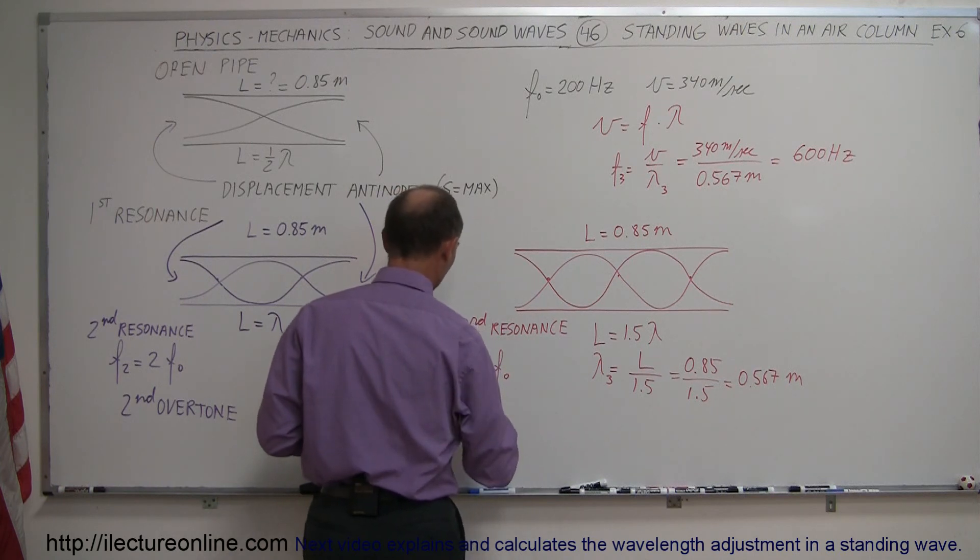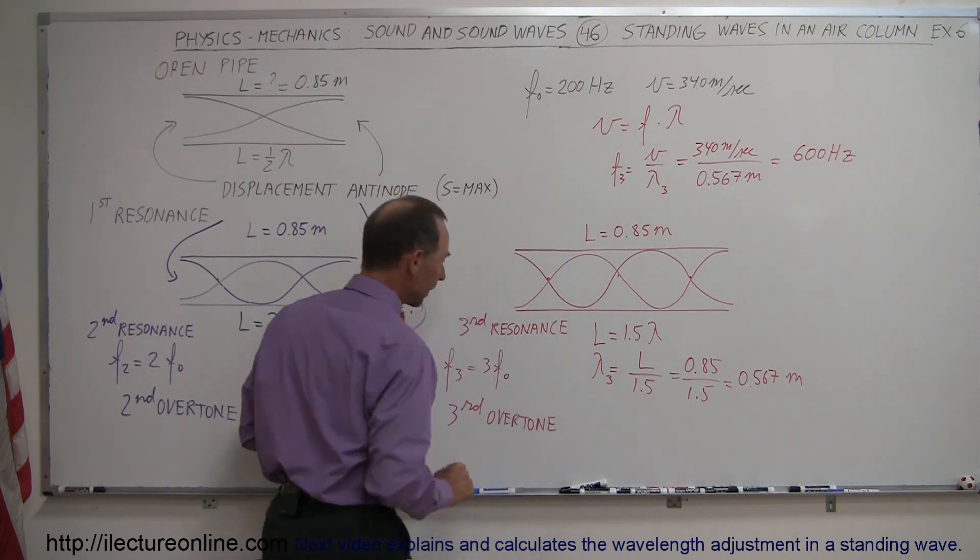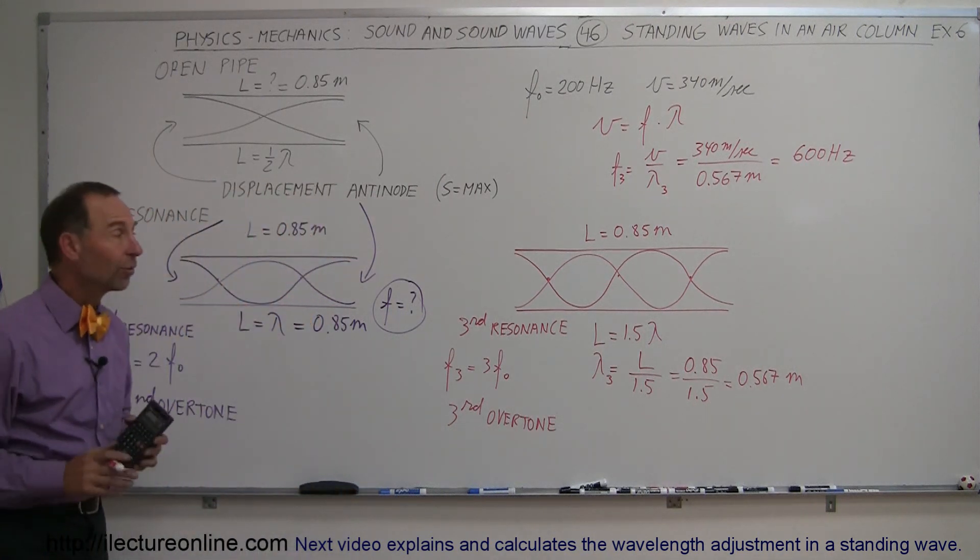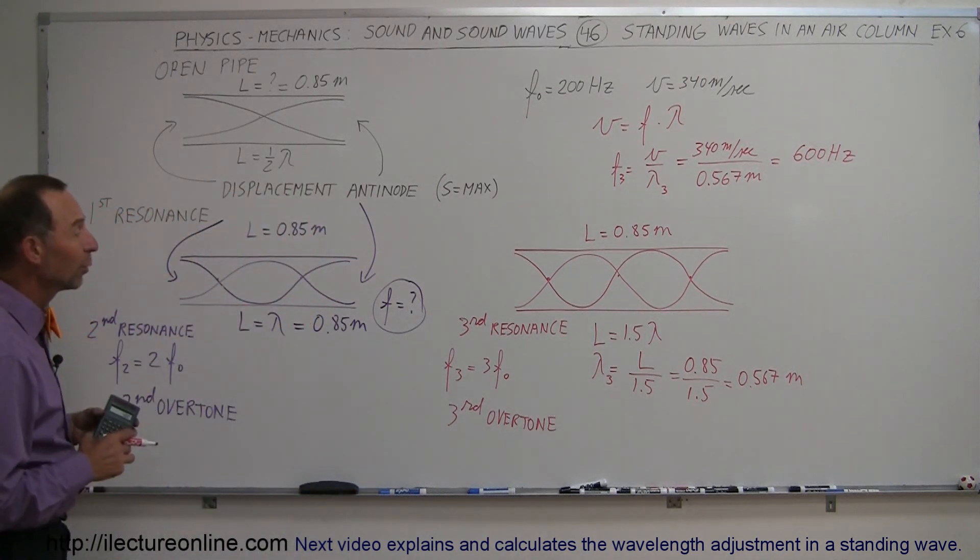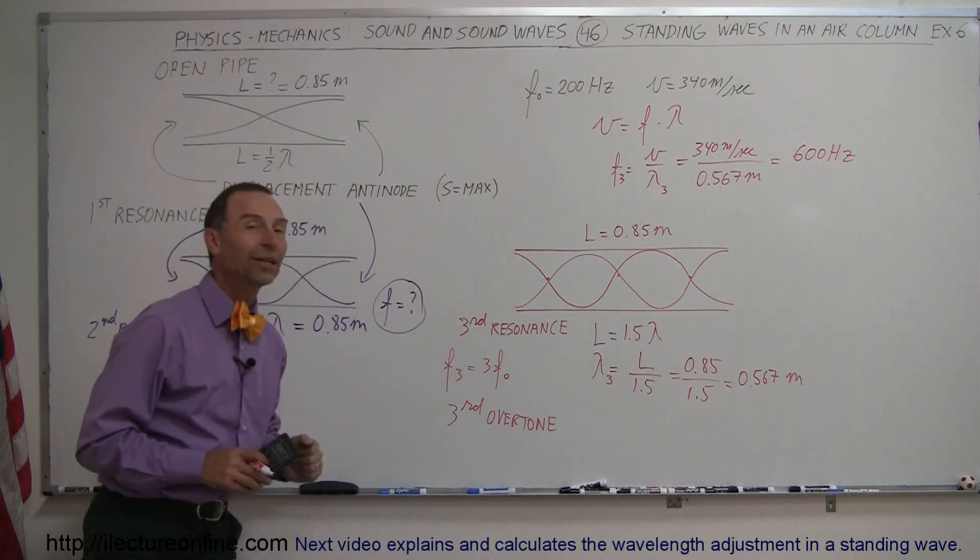And therefore, they call this the third overtone. And that's how you find the resonance frequency of a situation where we have the third resonance in an open-ended pipe.